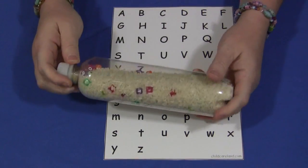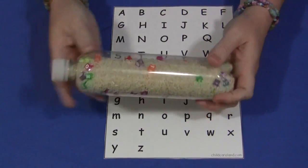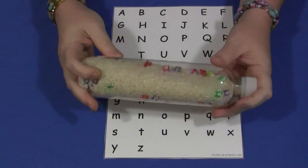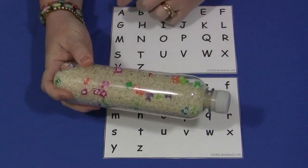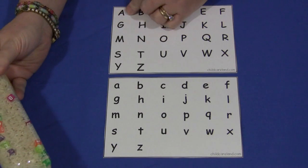Let's say they're looking through their bottle and they find the letter A. They could circle it off.